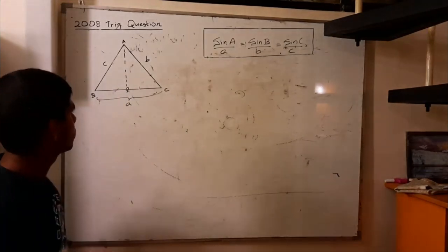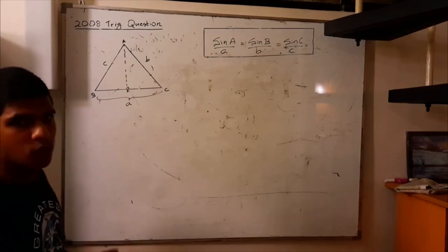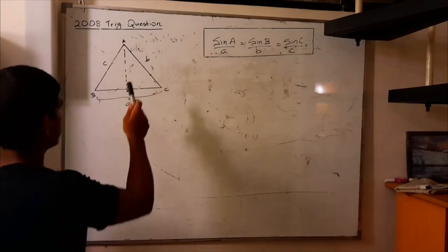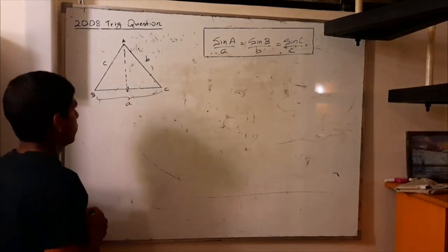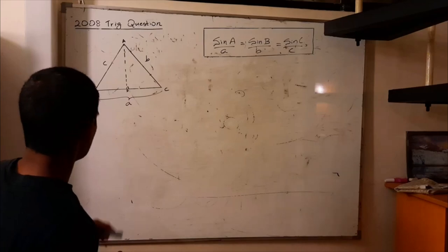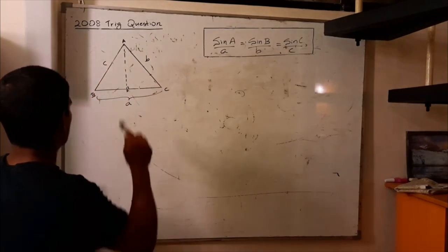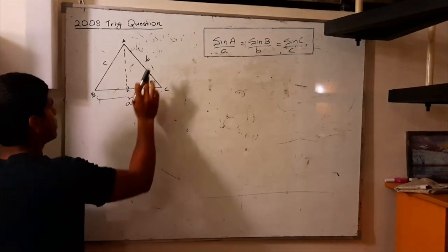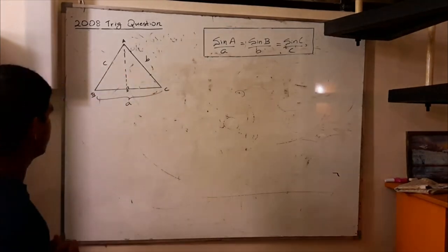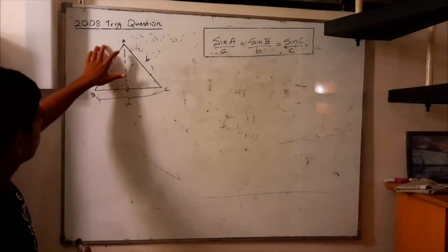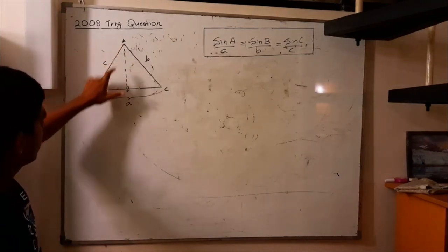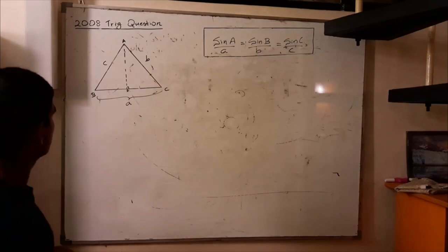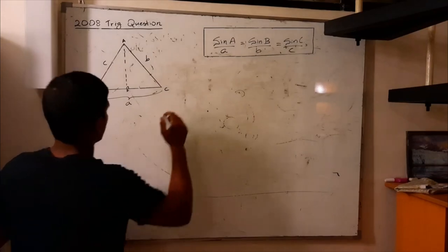First I am going to prove the sine rule for an acute angle triangle, and then we can move on to a right angle triangle and then an obtuse angle triangle. I have already drawn an acute angle triangle on the board and marked the angles A, B, C and sides a, b, c in the standard manner. I have also drawn a perpendicular line from A to BC, which is needed when proving the sine rule for an acute angle triangle.